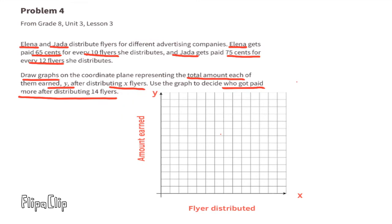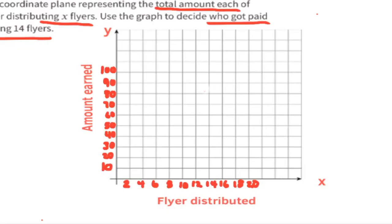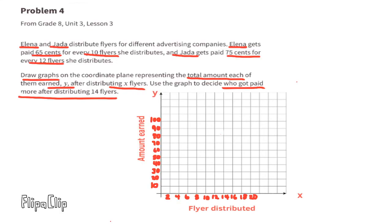The horizontal X-axis is labeled as number of flyers distributed, and the vertical Y-axis as the amount earned. Along the X-axis I counted in increments of 2 from 0 through 20, and along the Y-axis in increments of 10 from 0 to 100. Elena got paid $0.65 for delivering 10 flyers, so I can put a point at 10 on the X-axis and 65 on the Y-axis. Jada got paid $0.75 for delivering 12 flyers, so I can put a point at 12 on the X-axis and 75 on the Y-axis.